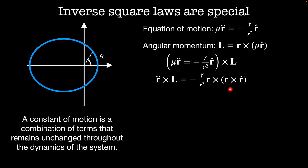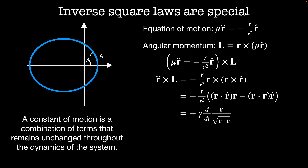I'm going to expand this vector triple product using the back-cab rule, which gives us minus gamma divided by r cubed equal to r-dot times r times r minus r-dot times r times r-dot. It turns out that this term is a total derivative, so we'll use our favorite trick and undo the chain rule, and we find that this is equal to minus gamma times the rate of change of the vector r divided by its magnitude, which is just minus gamma times the rate of change of r-hat.